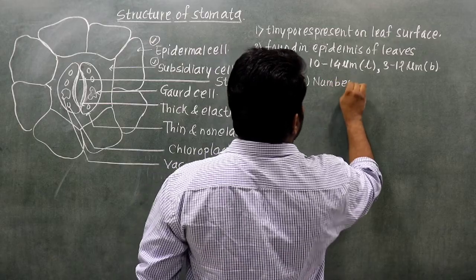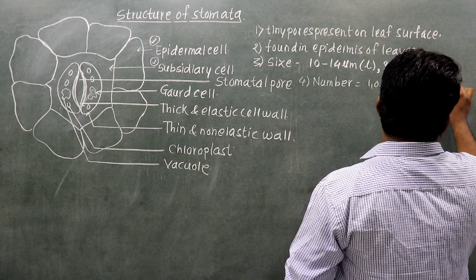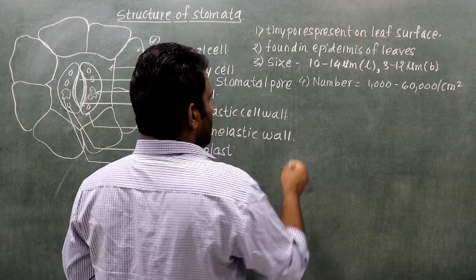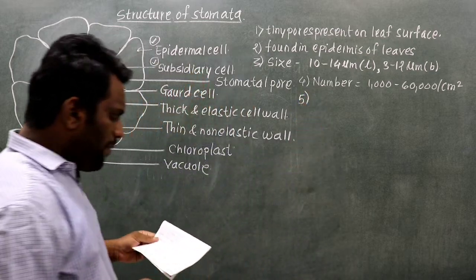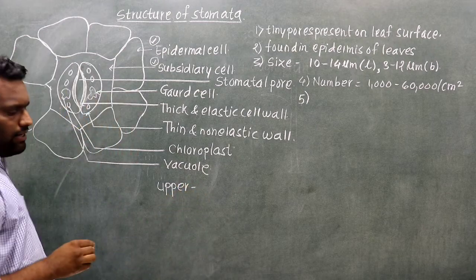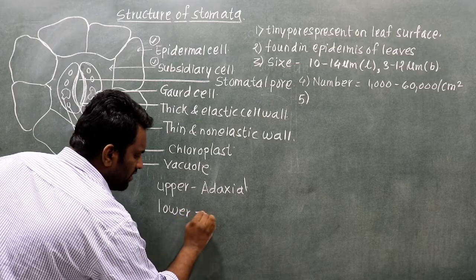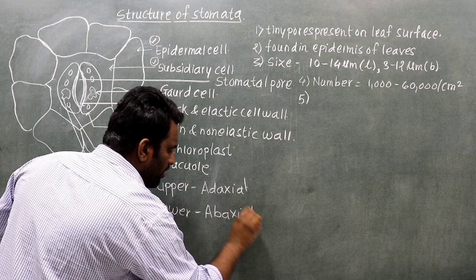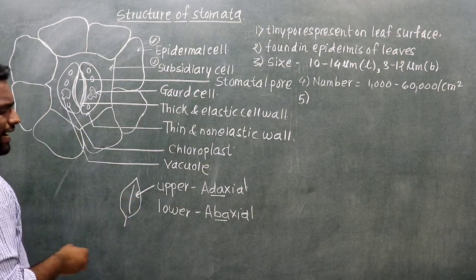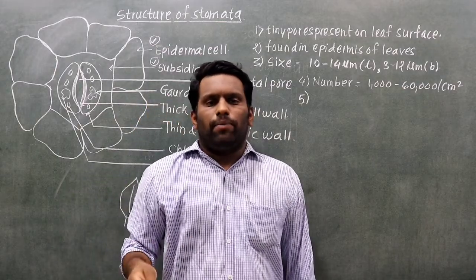The total number of stomata is around 1,000 to 60,000 per centimeter square. These tiny pores are present on both the adaxial surface (upper surface of the leaf) and the abaxial surface (lower surface of the leaf). In monocots and dicots the distribution differs.